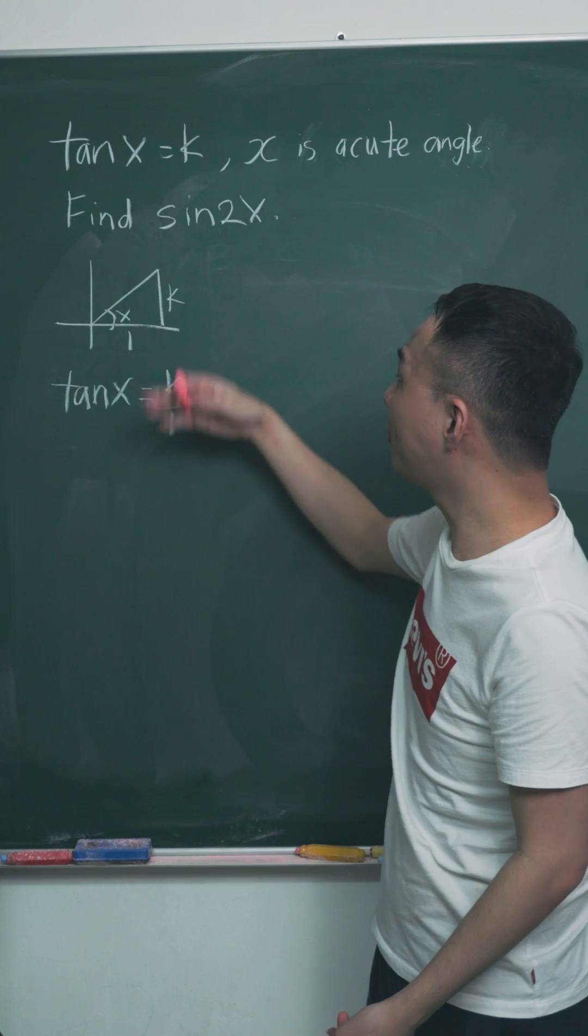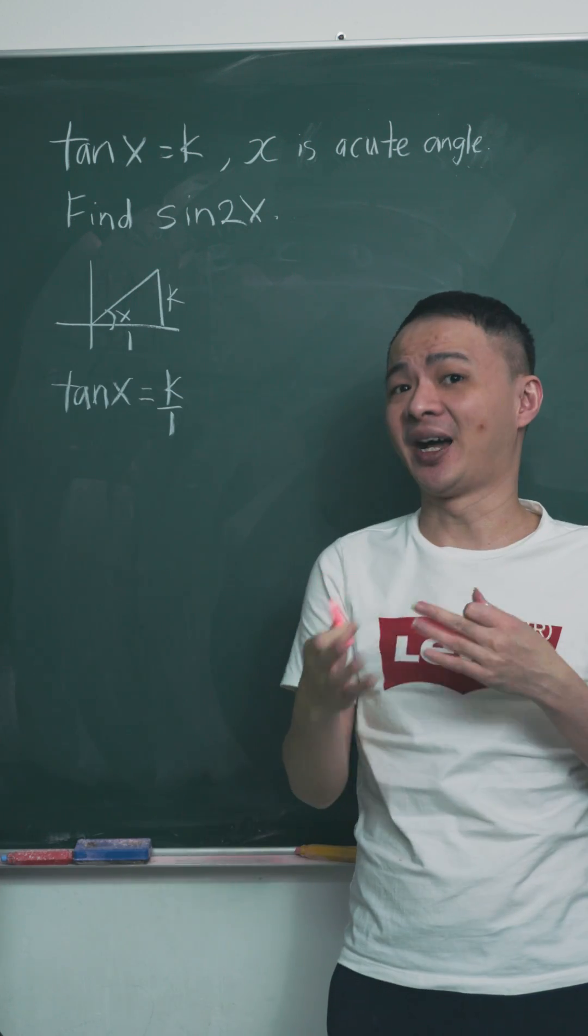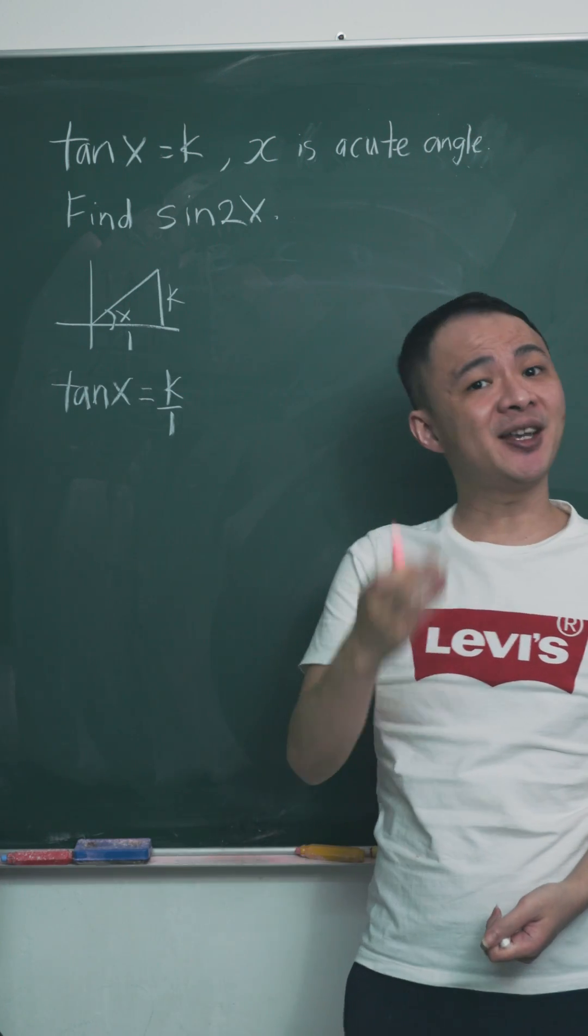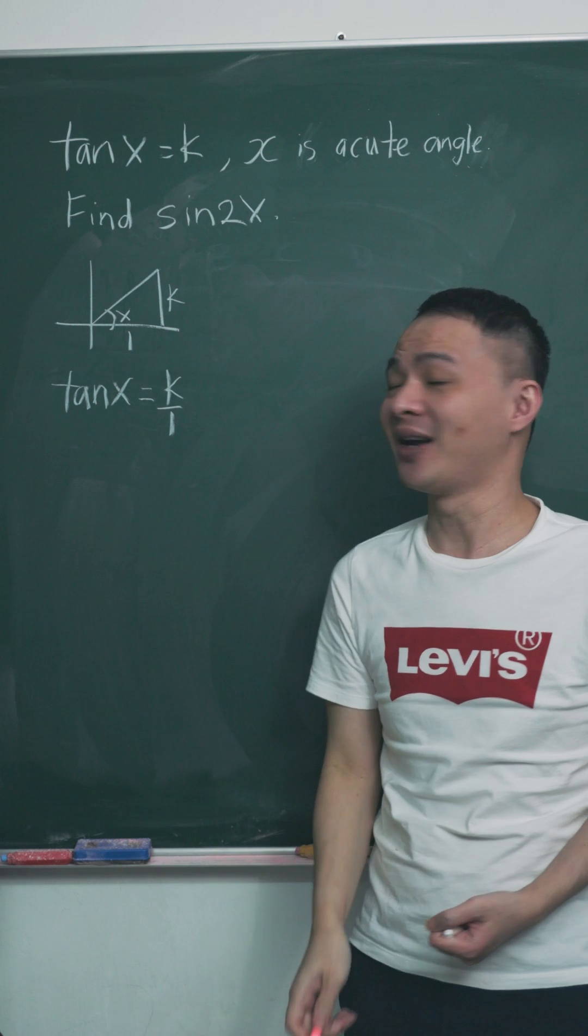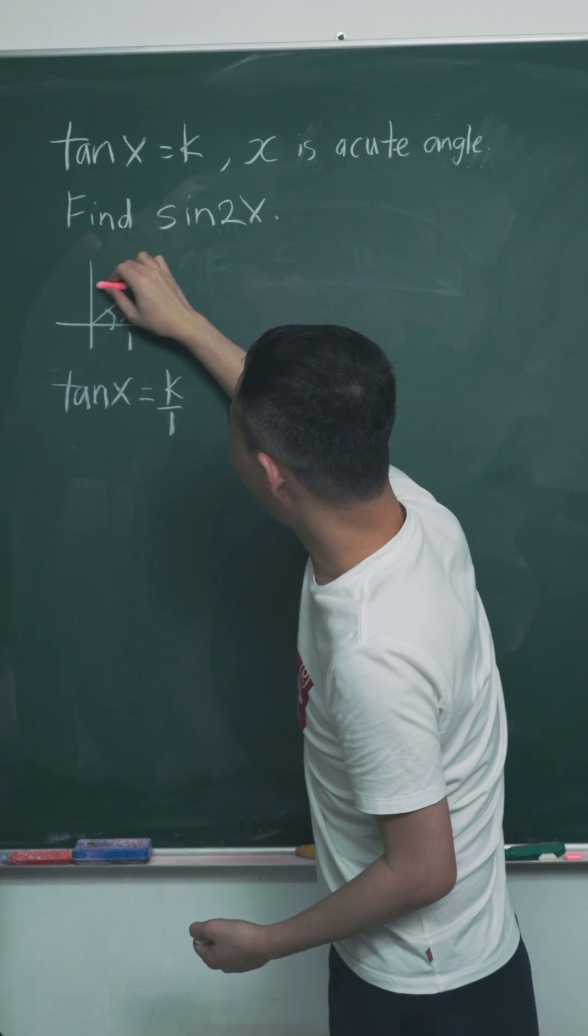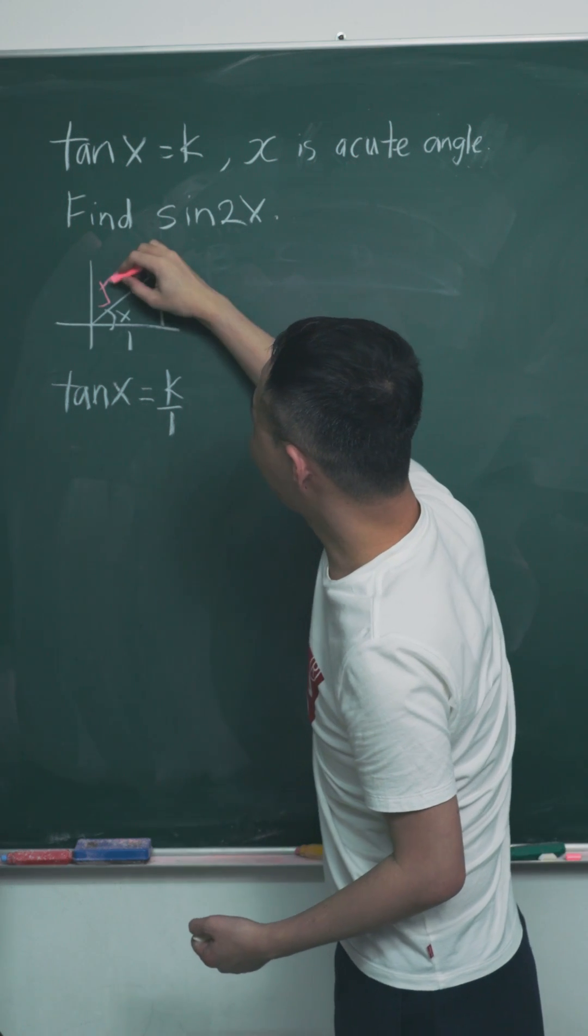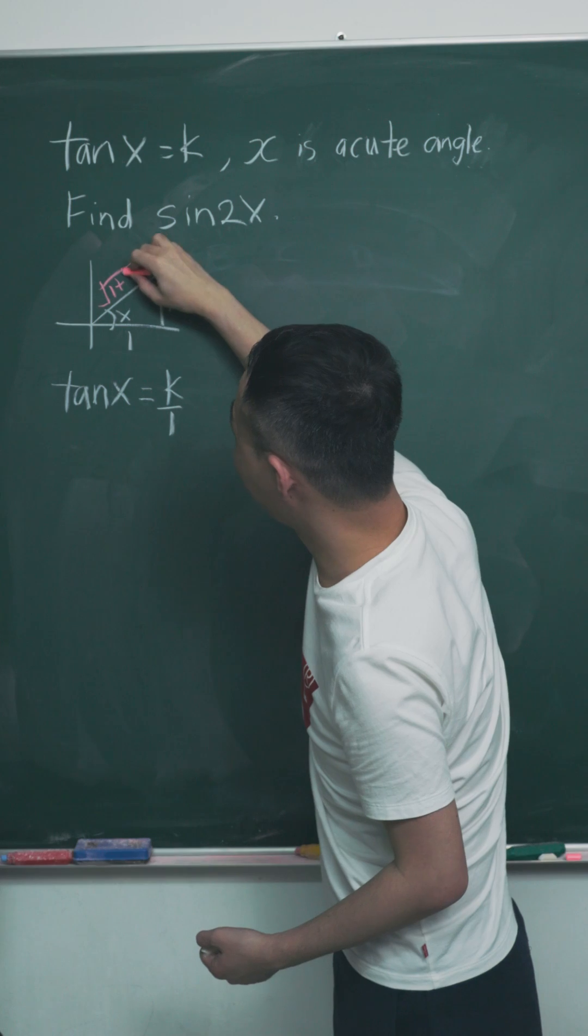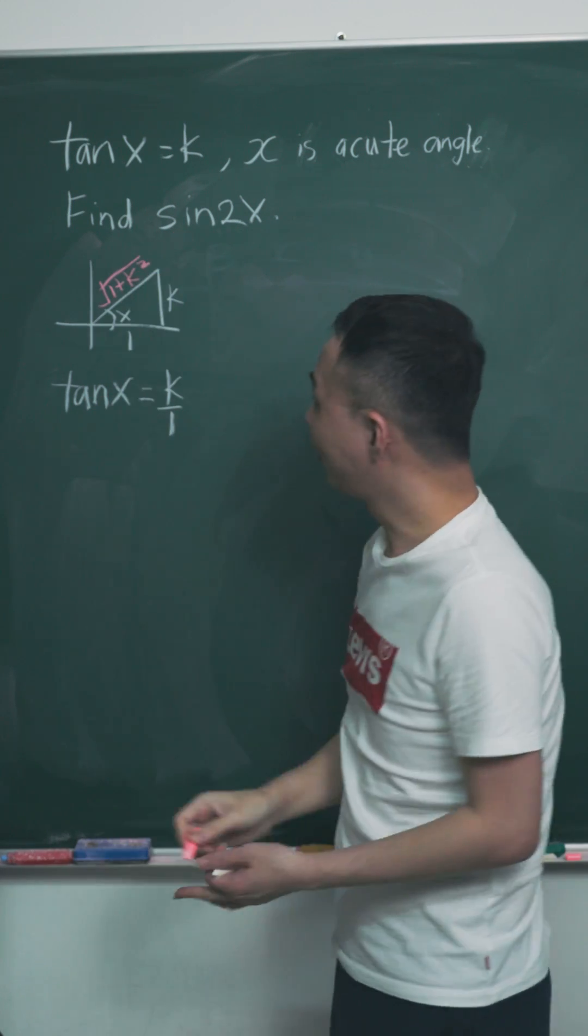And then right now, I want to use Pythagoras to find the length of the hypotenuse. Pythagoras tells me a squared plus b squared equals c squared. So I know that the hypotenuse will be square root of 1 squared plus k squared. I'm going to call it 1 plus k squared.